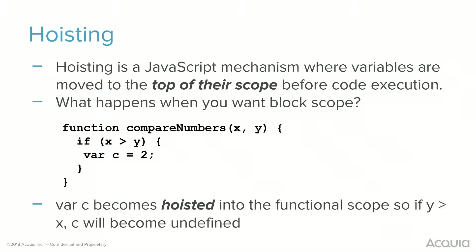There's this thing called hoisting. Hoisting is the JavaScript mechanism where variables are moved to the top of their scope before code execution — emphasis on 'top of their scope.' So what happens if we want block scope, which is basically other curly braces that aren't functions, like if-loops? In a compareNumbers function, if y is greater than x, the variable c will become undefined because it gets hoisted into the top of its scope, i.e., the functional scope.